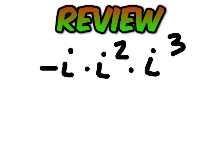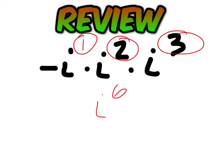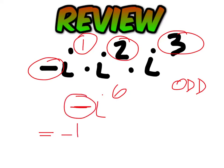I'll work this one out. Anytime you have a bunch of i's multiplied together, concentrate on the exponents first. 1 plus 2 is 3, plus 3 is 6. Now look at your negative signs — you have one negative sign. If you have an odd number of negative signs, the answer will have a negative sign in front to start. Make that negative sign a negative 1 so you don't forget about it, then simplify i to the sixth. i to the fourth is 1, so what you're left with is i squared, which is negative 1. Multiply them together and you get 1.